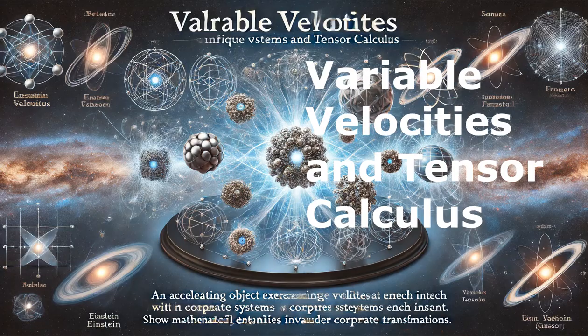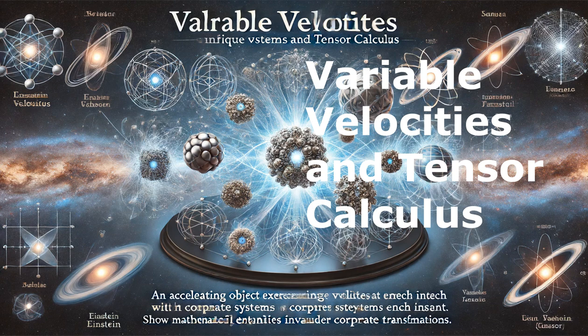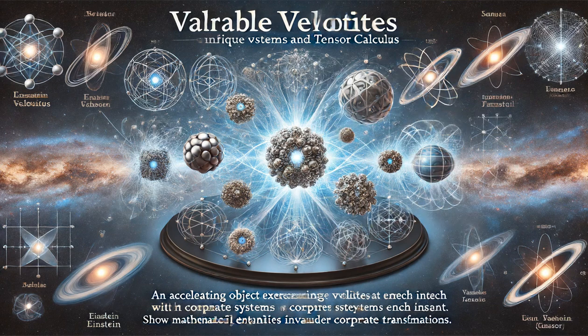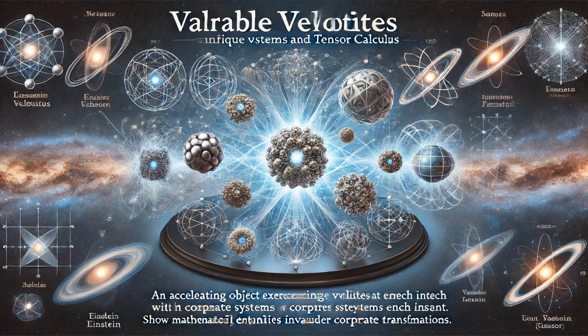Einstein tensors are used to manage the complexities of transitioning from one system to another. These tensors are mathematical entities that remain invariant under coordinate transformations, making them ideal for describing the laws of physics in coordinate systems that vary across spacetime.